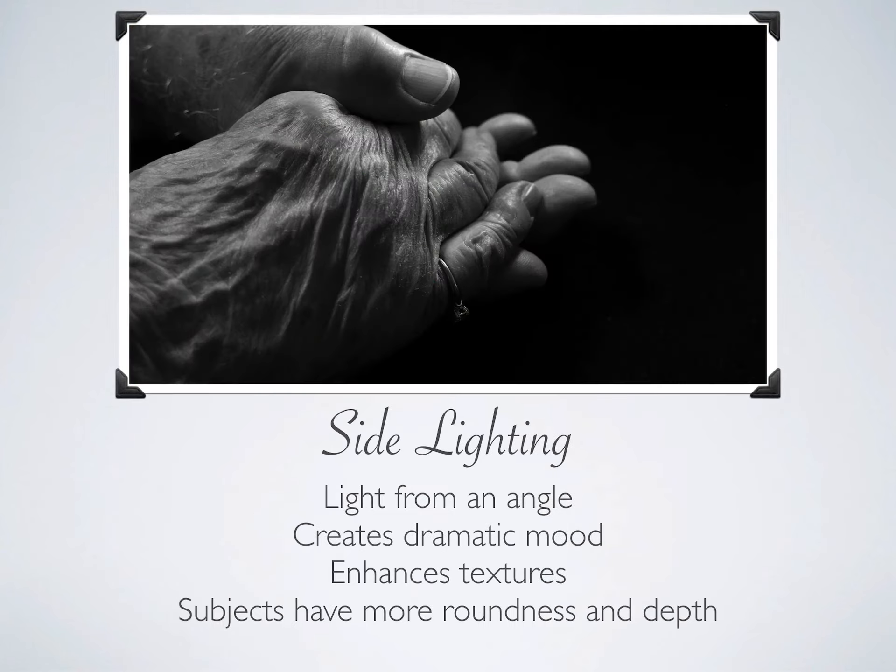Side light — light from an angle, more on one side than the other — creates dramatic mood and enhances textures. Subjects have more roundness and depth. It highlights one area and gives you shadows on the other area. So it creates texture, almost like the skin and the wrinkles in the hands that you're seeing.